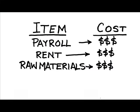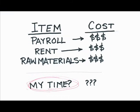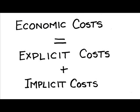Economic costs do, of course, include the explicit or accounting costs, but also the implicit or opportunity costs. So economic costs are both the explicit and the implicit costs.